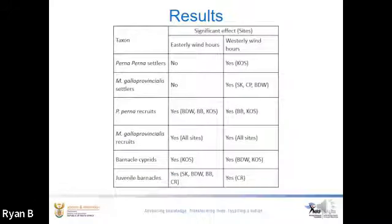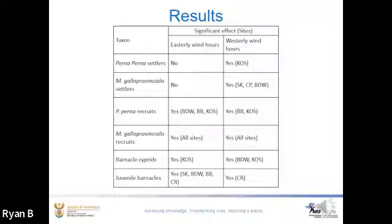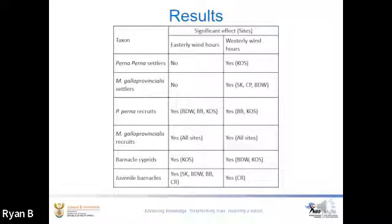The table shows the number of hours of either westerly or easterly wind and its effects on the abundance of each taxon and ontogenic stages per site. The number of hours of easterly wind had a significant effect on the late stages of mussels and both ontogenic stages of barnacle abundances. The number of hours of westerly wind, on the other hand, had a significant effect on all taxa and all ontogenic stages. The effect of both wind regimes on abundance differed per site.